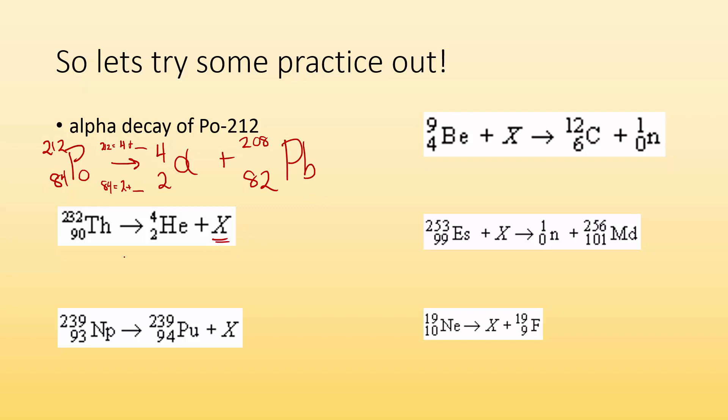Same thing for this. What is X? I got 90 equals 2 plus some number. That's going to have to be 88. And what element has an atomic number of 88? That's going to be radon. So I got RA. Now I got to check out my mass. I got 232 has to equal 4 and some number. That's 228. So that's what X has got to be.